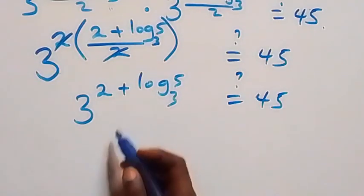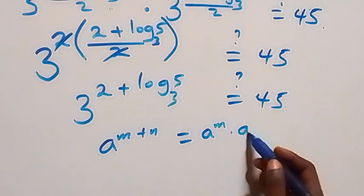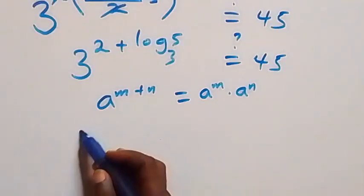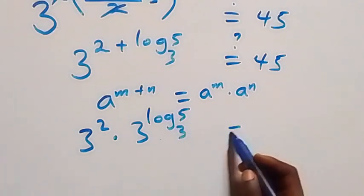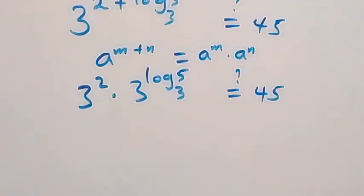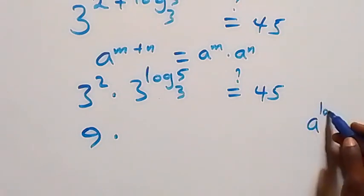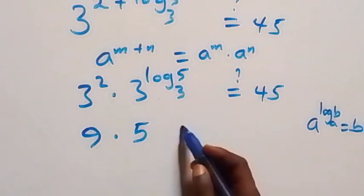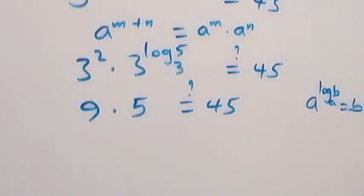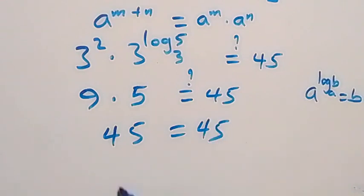By the law of indices, a raised to power (m plus n) equals a raised to power m times a raised to power n. So this becomes 3 squared times 3 raised to power log 5 base 3, equals 45. Now 3 squared is 9, and 3 raised to power log 5 base 3 equals 5. So we have 9 times 5 equals 45, which is indeed 45. Left hand side equals right hand side.